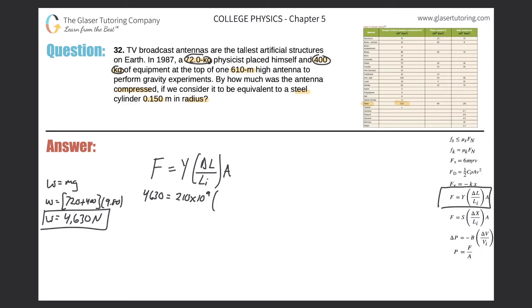Multiplied by the change in length, what we're looking for, divided by the initial length, and they told us the initial length was 610 meters, and we're going to leave it like that since that's in meters. Multiplied by the cross-sectional area, and it says that it's a steel cylinder.